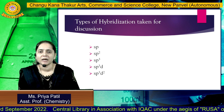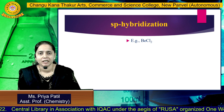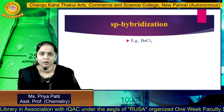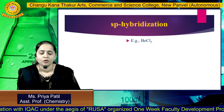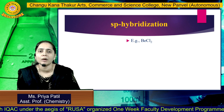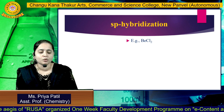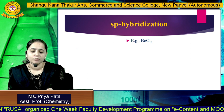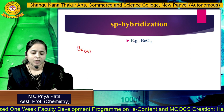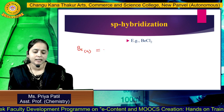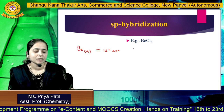We will discuss one by one. The very first type of hybridization is SP hybridization, and the example is BeCl2. Now how does BeCl2 show SP hybridization? We have to know about the atomic orbitals of the central atom and surrounding atom. The central atom in BeCl2 is Be, having atomic number 4.